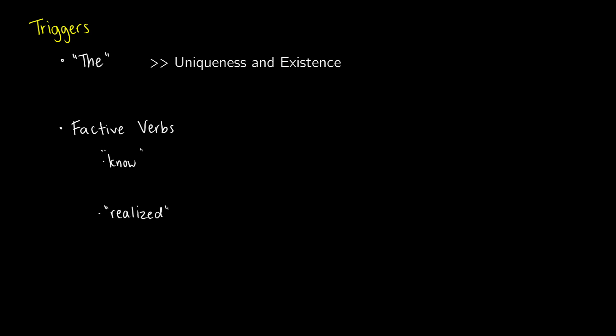Factive verbs are another type of trigger. This would be a sentence like 'I know you were taking a nap.' What this is presupposing is that you were taking a nap. If you say 'I know you were doing something', the word 'know' is presupposing that the event occurred because you wouldn't say that if the event never happened.